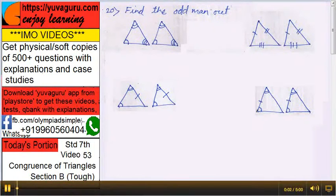Hi friends, welcome to IMO videos, standard 7th, video number 53, congruence of triangles, section B tough, let us start.